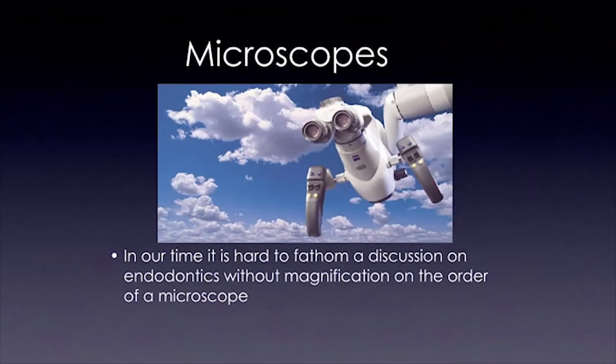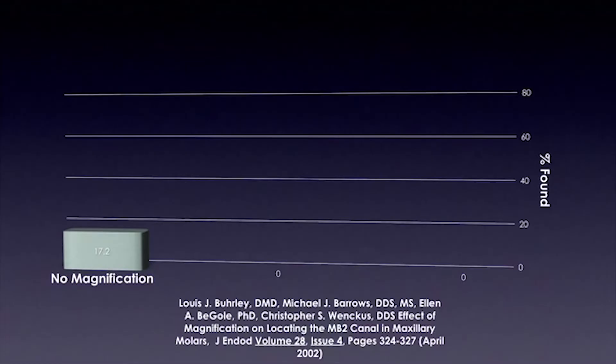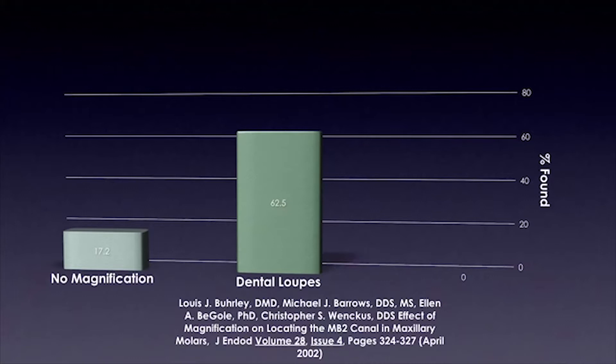In our time, it is hard to fathom a discussion on endodontics without magnification on the order of a microscope. No study illustrated this more to me than the Burley-Barrow study of 2002, which showed how difficult it was to find the mesial buccal number two canal of the maxillary first or second molar without magnification. The canal is found around 85% of the time depending on the literature — but without magnification, they found it only 17.2% of the time. With magnification you were up to 62.5%, and using a microscope, around 71% of the time. An incredible jump.